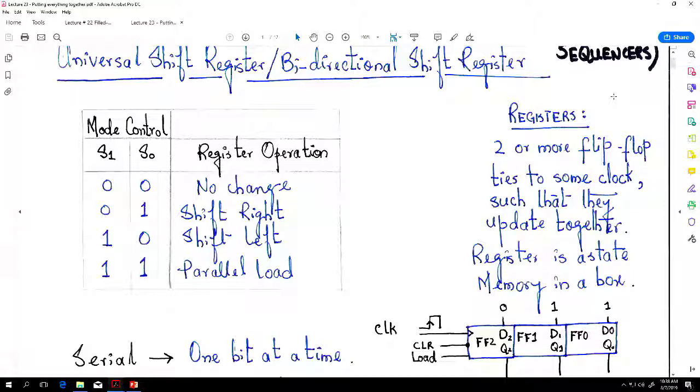No change would mean whatever the input is taken up by the register, it displays the same thing at the output. So say if the four-bit sequence is triple zero one at the output, you also get triple zero one. There's no change to it. For zero one, every time the clock arrives, it will shift to the right.